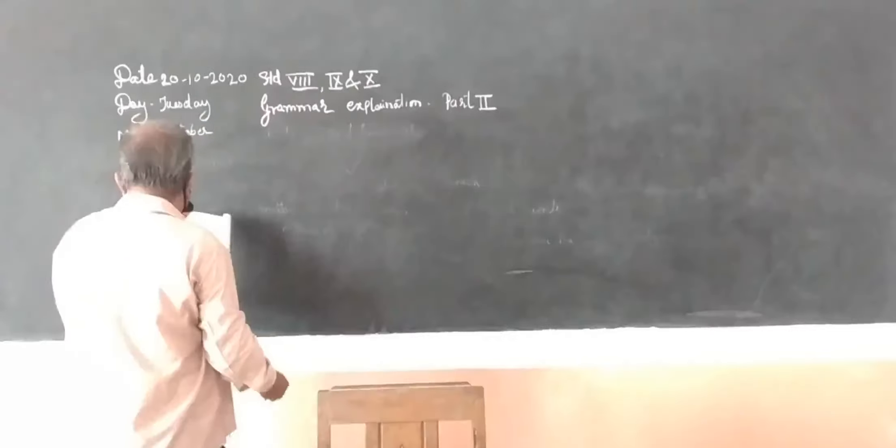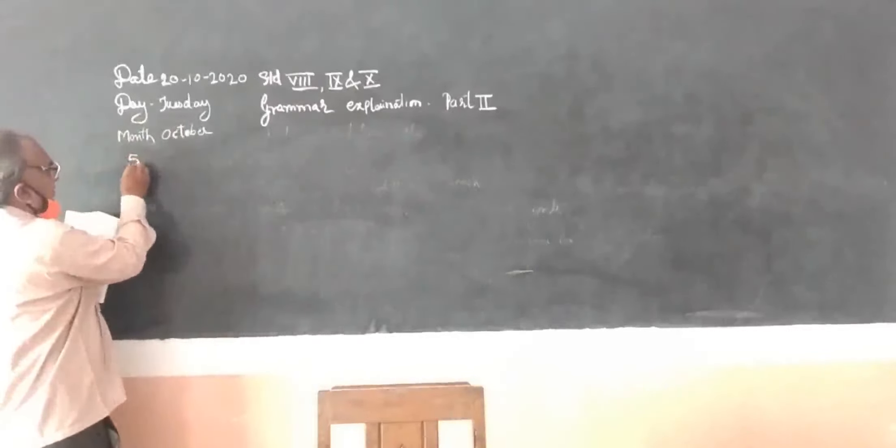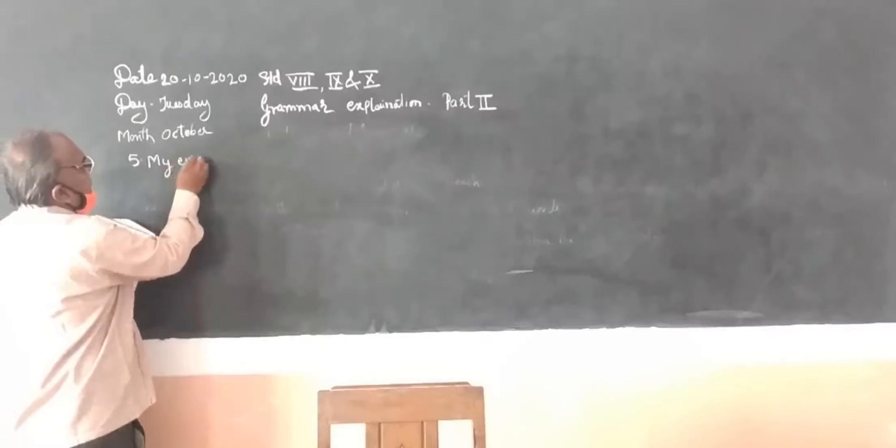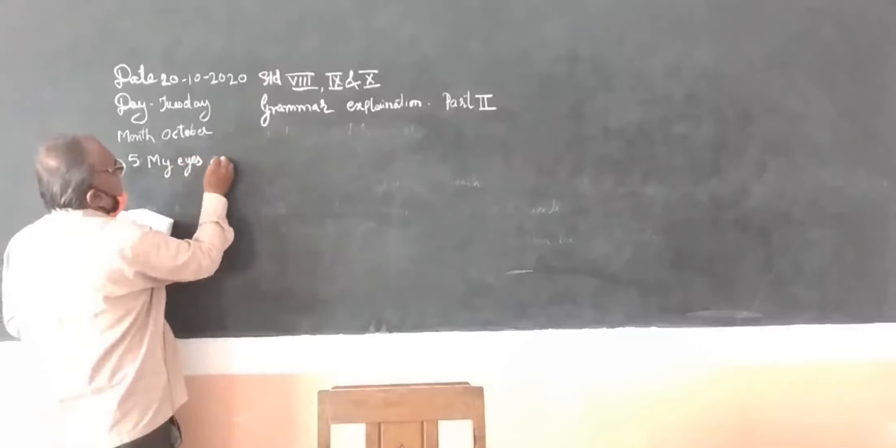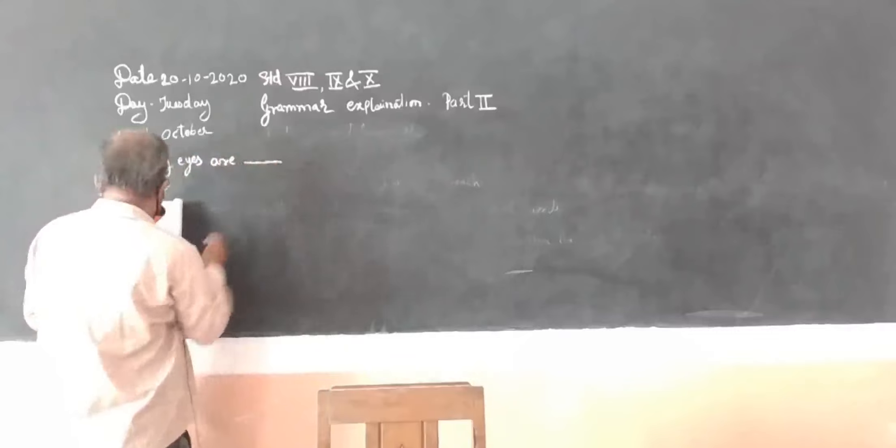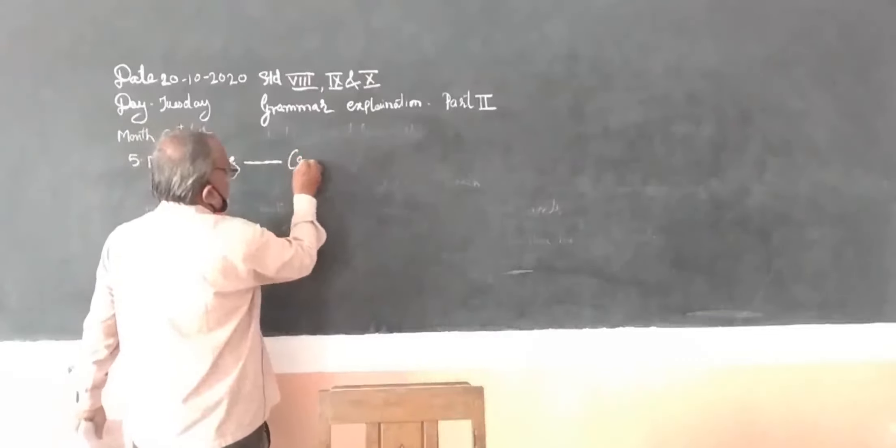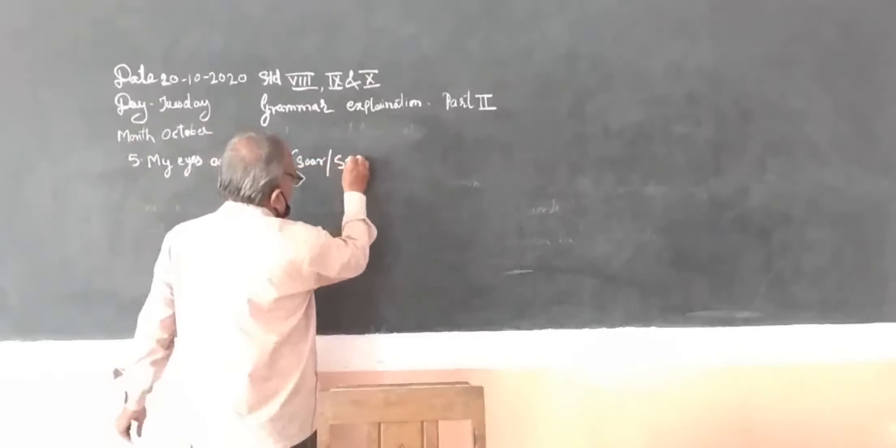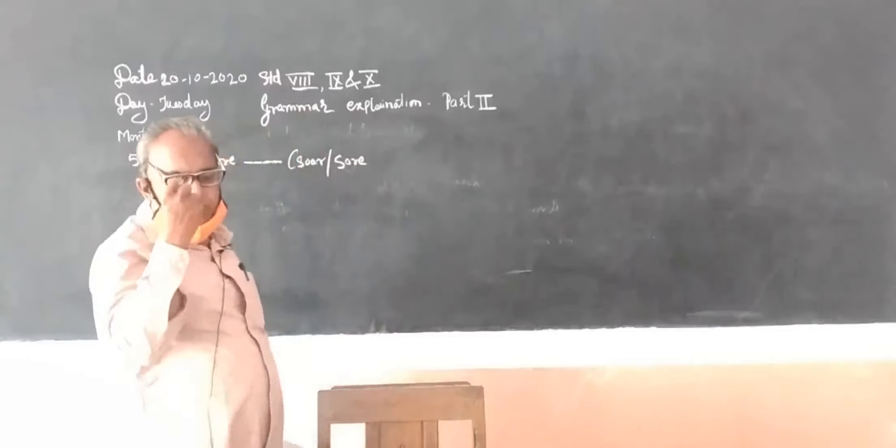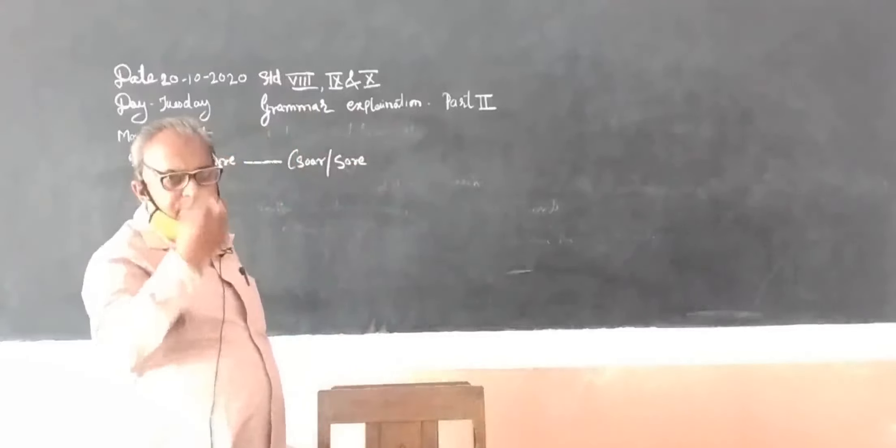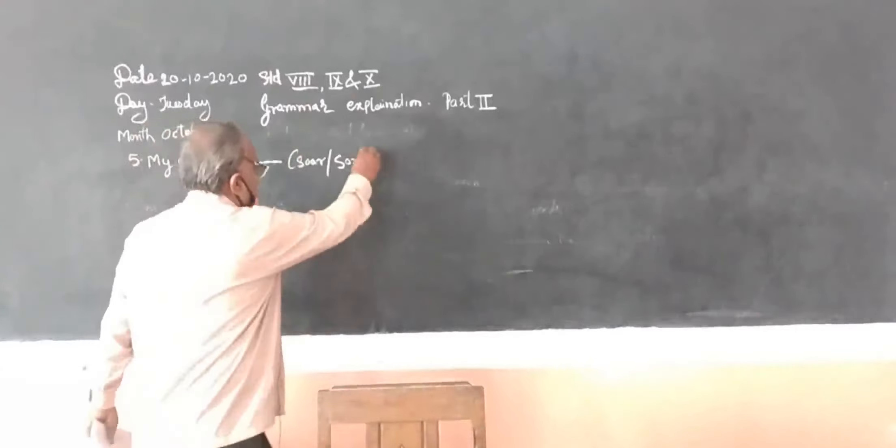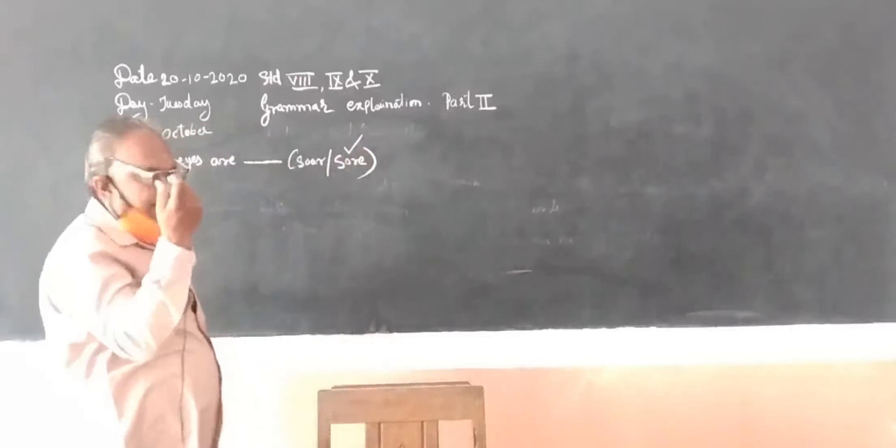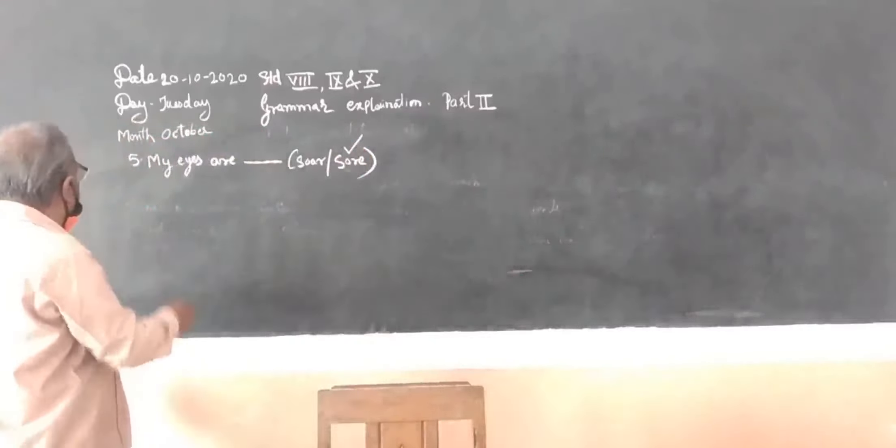The fifth one: my eyes are sore, S-O-R-E, and soar S-O-A-R. Your eyes become red and it starts soaring. So which sore we have to use? That is sore eyes, what we call when your eyes become red. So that's sore it is.